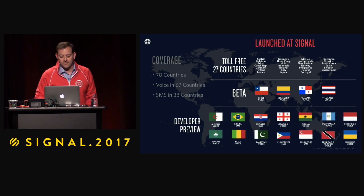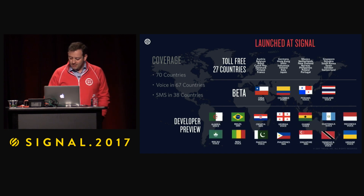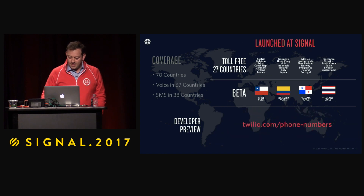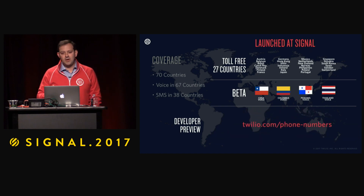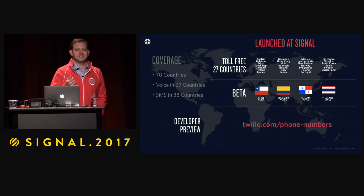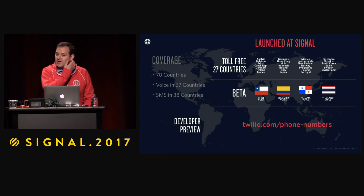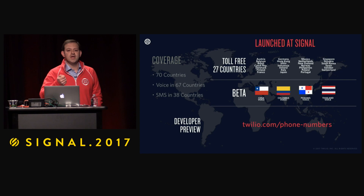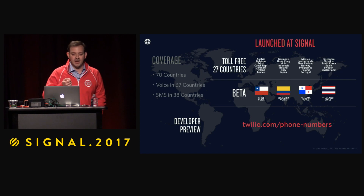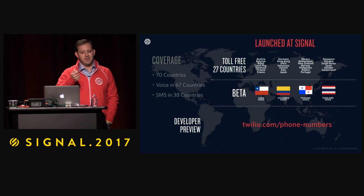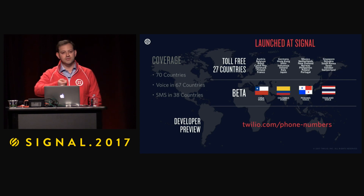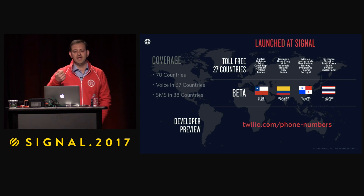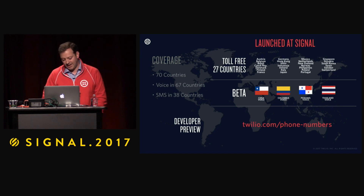We also brought 14 numbers to developer preview. Developer preview numbers are numbers that are assigned on demand, so you won't find them in the console and API, but if you go to the URL on the screen you can request a phone number that will be provisioned to your account. You can use it for testing before it goes to beta and becomes available in the console and API.